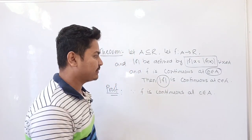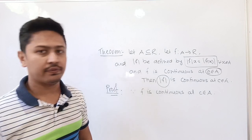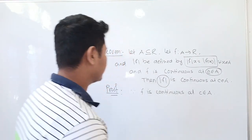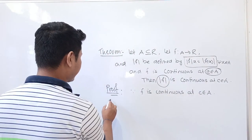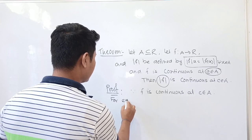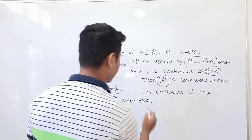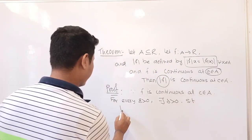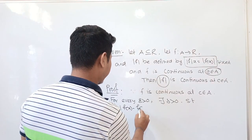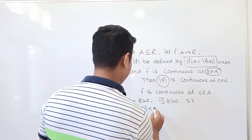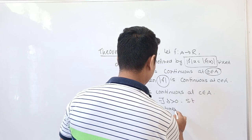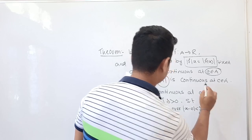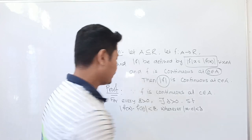Since f is continuous at c belonging to A, by the definition of continuity of a function at a point: for every epsilon greater than zero, there corresponds a delta greater than zero such that mod of f of x minus f of c is less than epsilon, whenever mod of x minus c is less than delta.